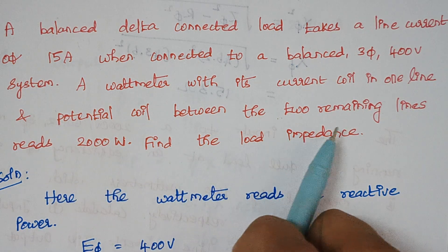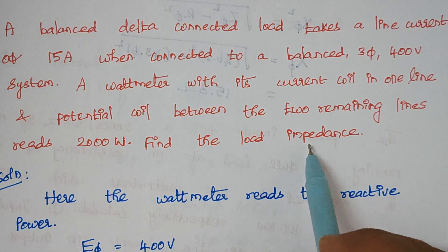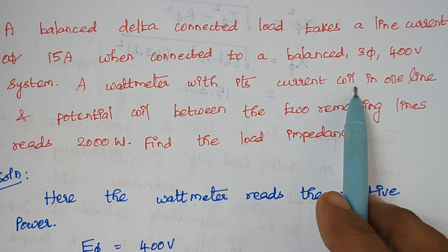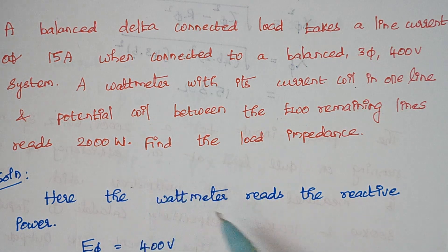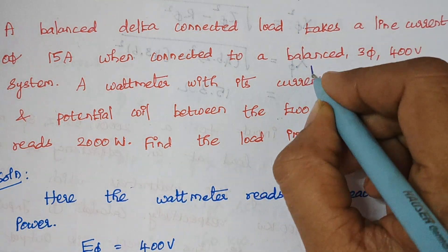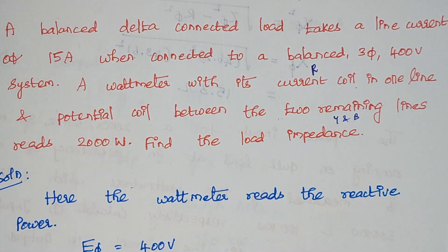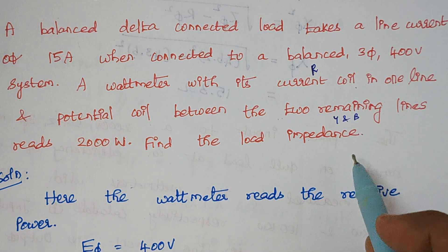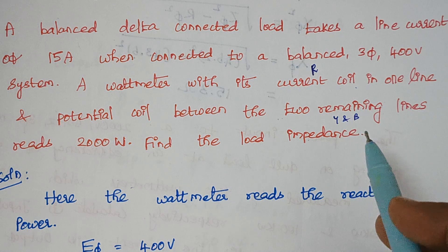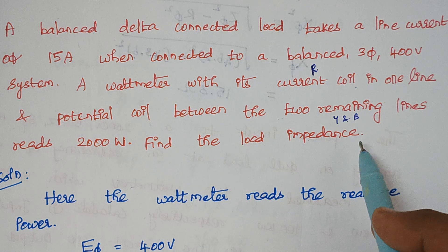The current coil is connected in one line and the potential coil is connected between the remaining two lines. For example, if the current coil is connected in R phase, the potential coil will be connected between Y and B phase. This type of connection is typically different — whenever a wattmeter is connected like this, it always measures reactive power. That is the thing which is indirectly said in the question.